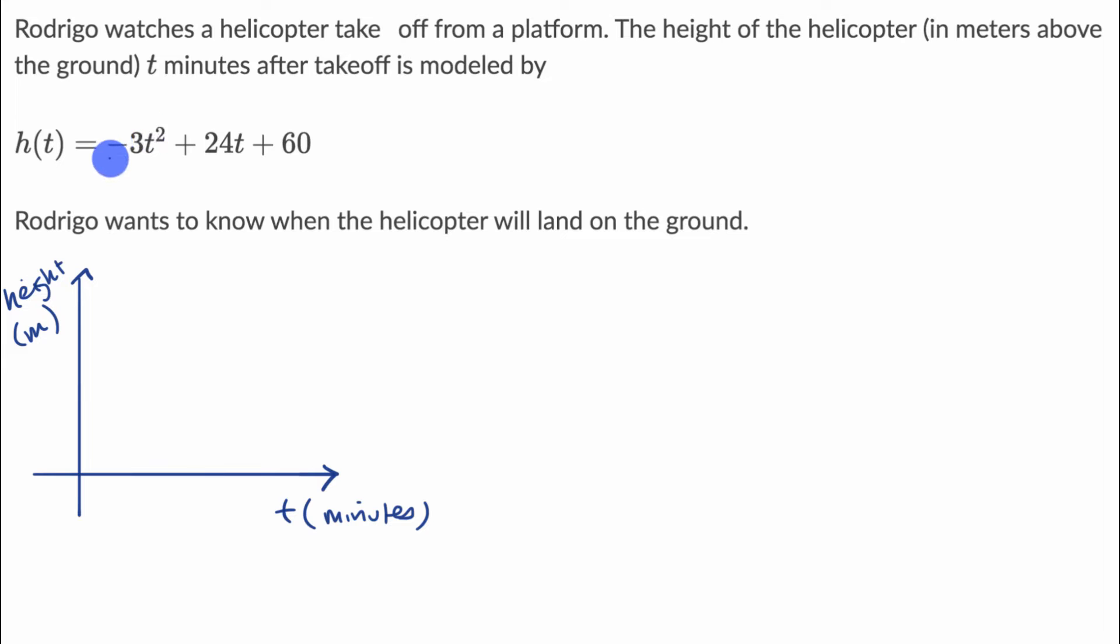Now, I don't know exactly what the graph looks like, but given that I have a negative coefficient on my quadratic term, I know that it is a downward opening parabola like that. And it says that the helicopter takes off of a platform. So however high the platform is, then it takes off, and it's going to do something like this.